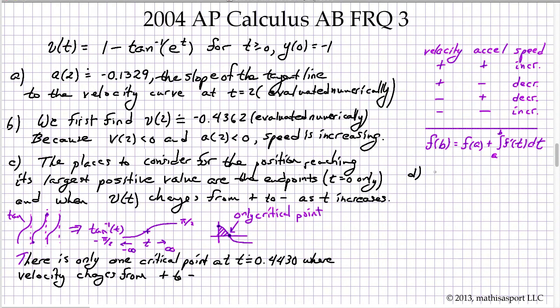Let's write it like this. Position at time t equals 2 equals position at 0 plus the signed area from 0 to 2 of the velocity function with respect to time.